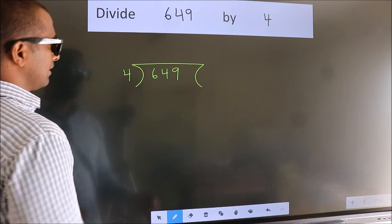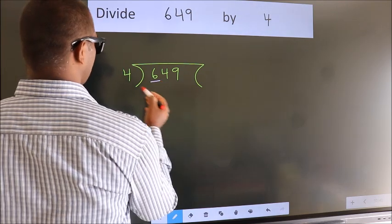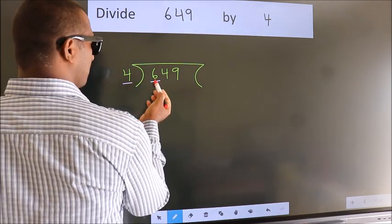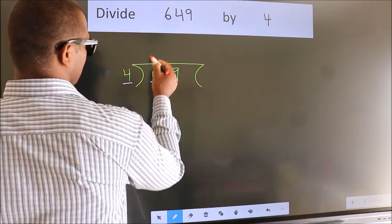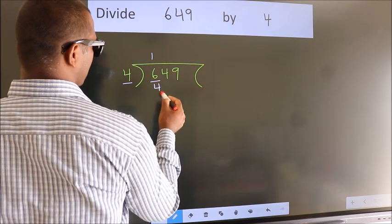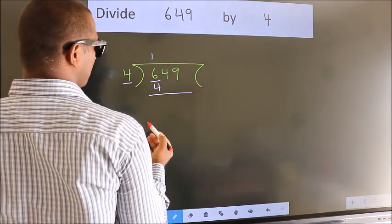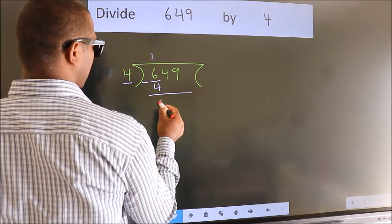Next, here we have 6, here 4. A number close to 6 in the 4 table is 4 once 4. Now we should subtract. We get 2.